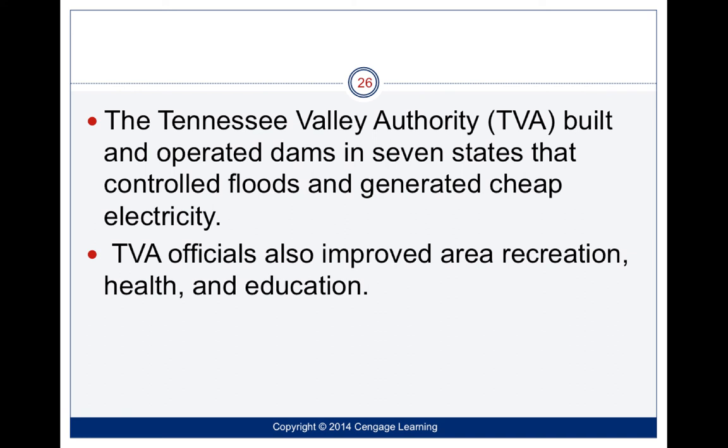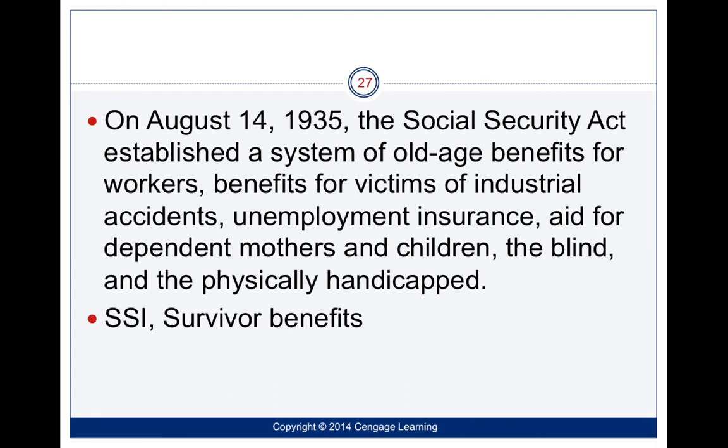The Social Security Act was also passed, providing a safety net for people unable to work in a couple of different ways. You can get Social Security when you reach 62, 65, 67, or 70. If you're disabled and can't physically work, you can collect early. If you are married and your spouse dies prior to collecting Social Security, in some instances you can get survivor benefits.